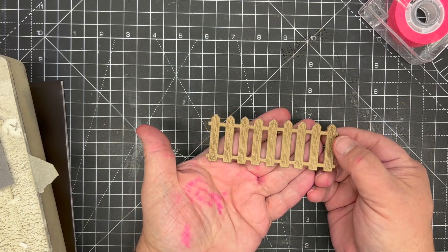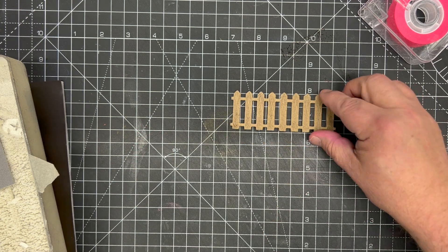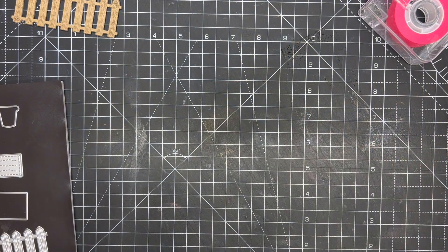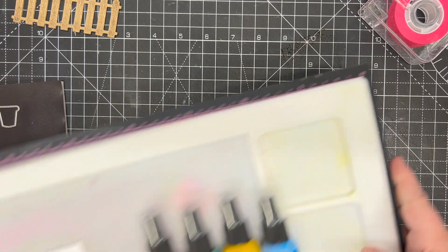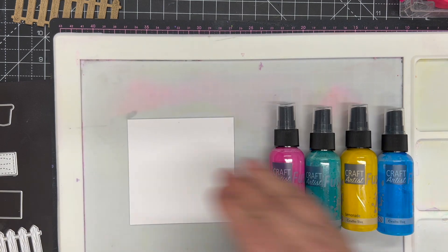That way we get quite a nice deep garden fence. So now we want a background for this garden fence to sit against, so I'm going to use the Craft Artist fusion sprays.